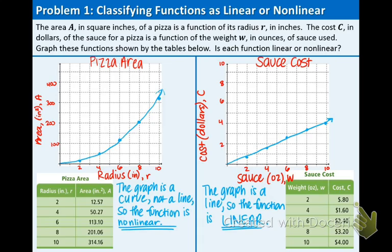Now let's look at the table. You can see that as the weight goes up, the cost goes up, and it's a uniform increase — it's increasing by 80 cents each time. So that is another proof that this relationship is linear.